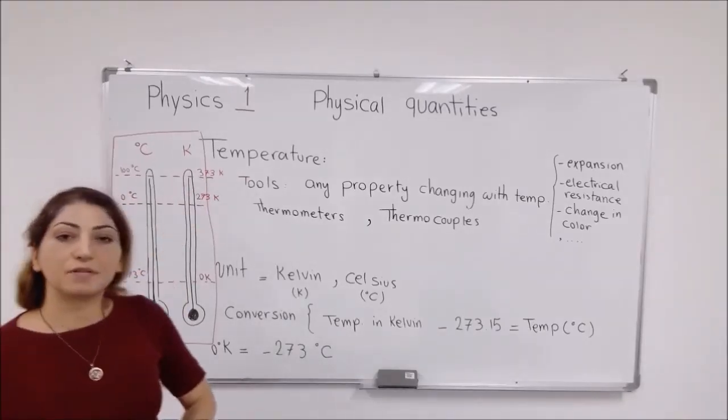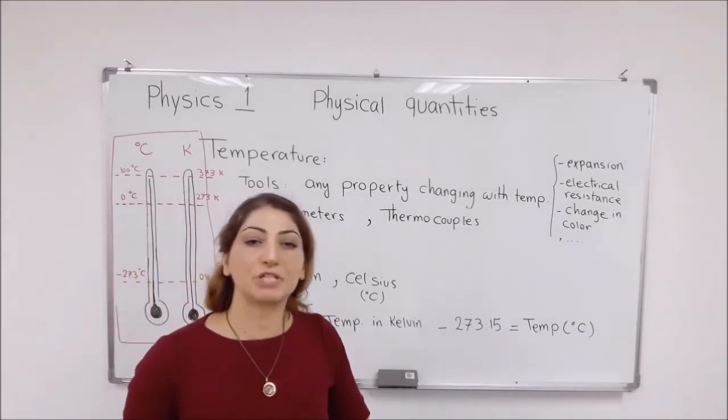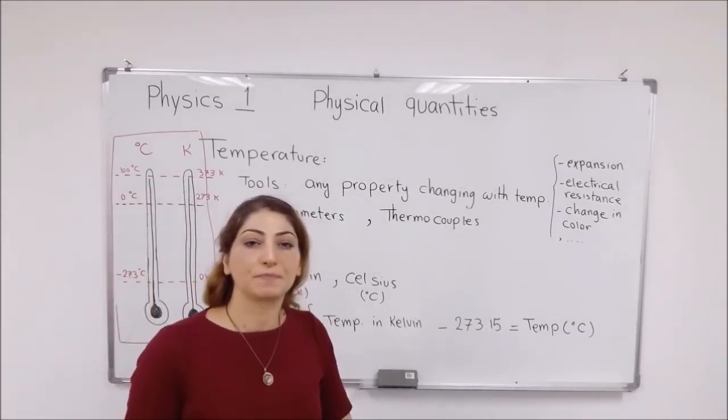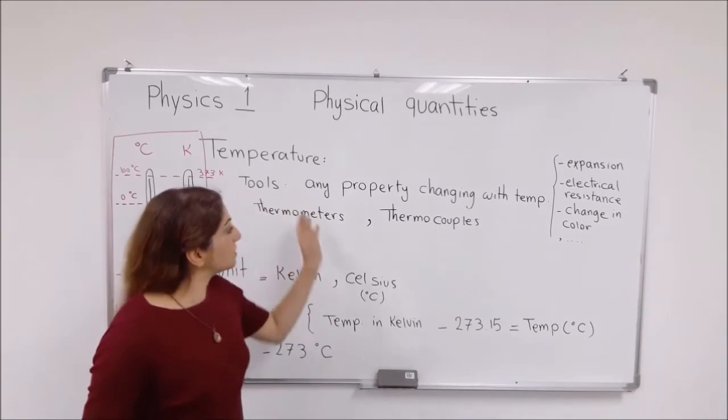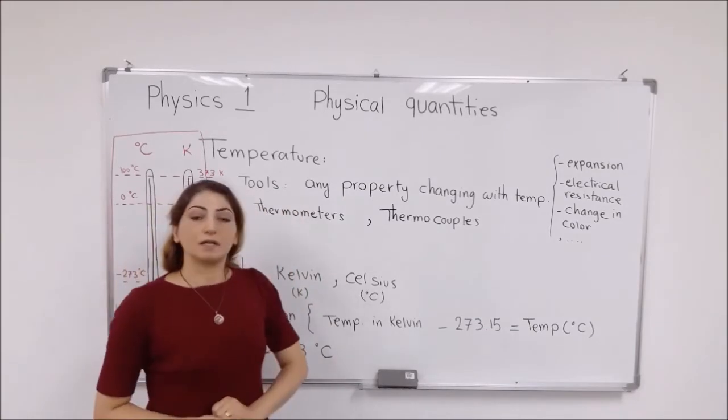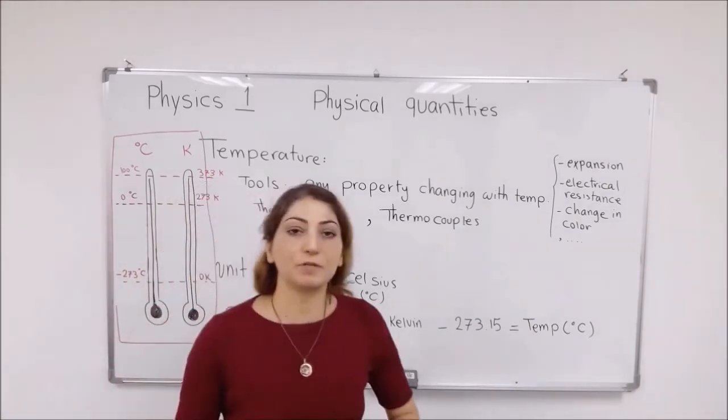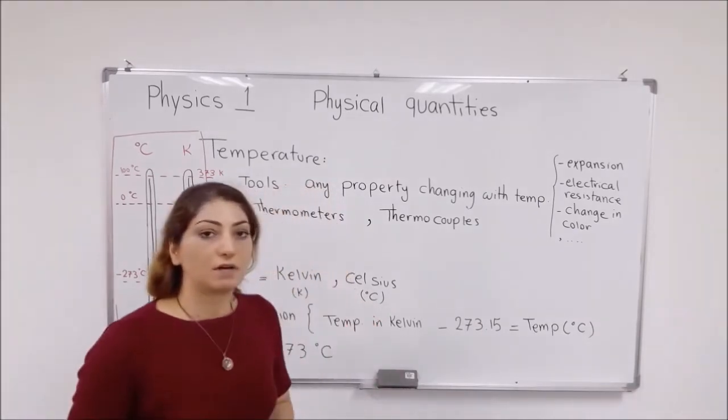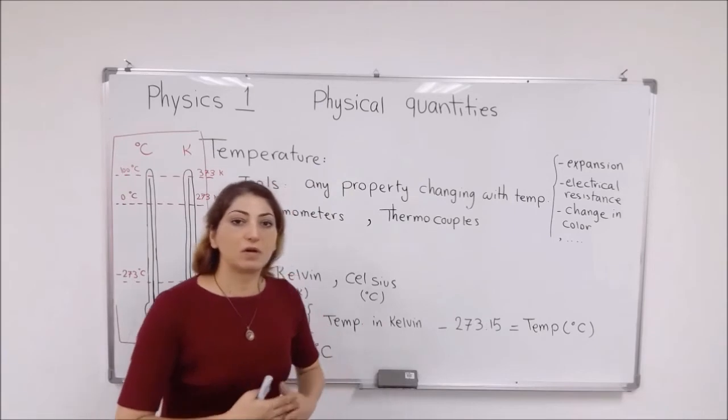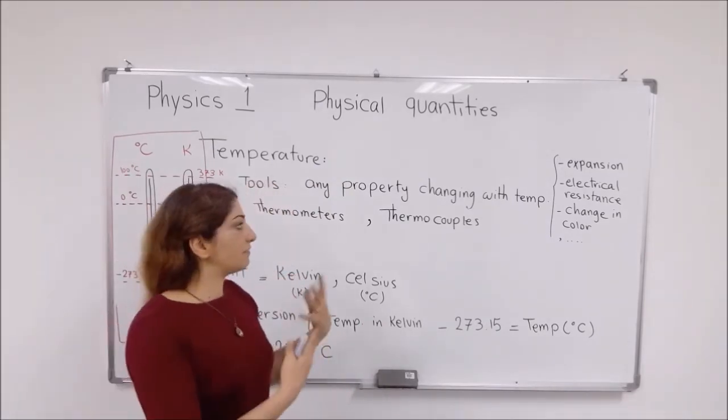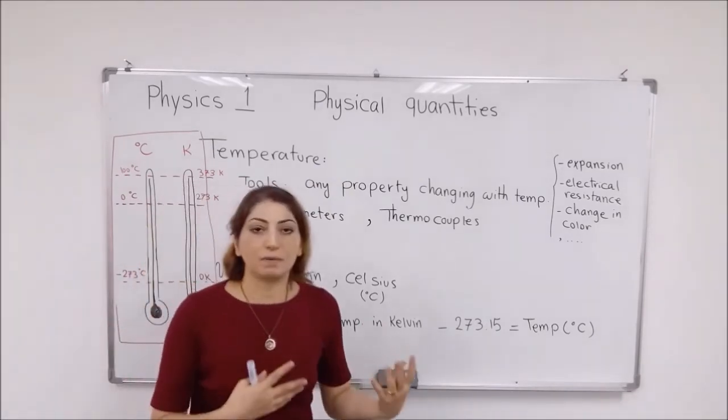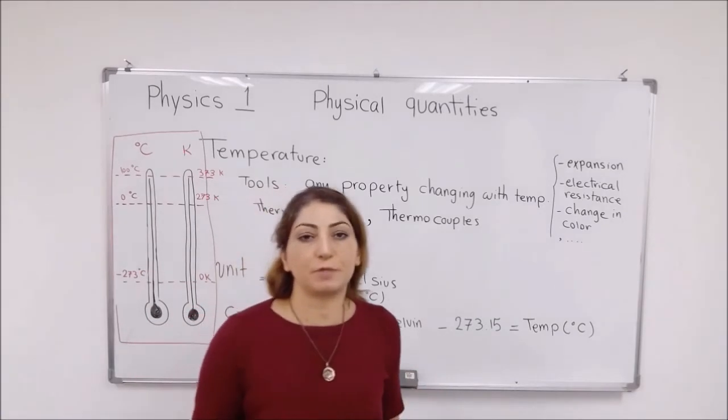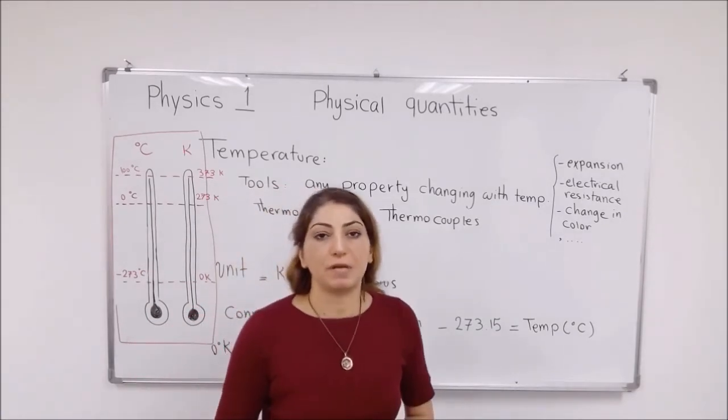Okay, about the temperature and how we can measure the temperature of objects. The tools that we use to measure the temperature of different environments or places are made based on this definition: that any kind of property of the matter that changes with temperature can be used to make a thermometer.